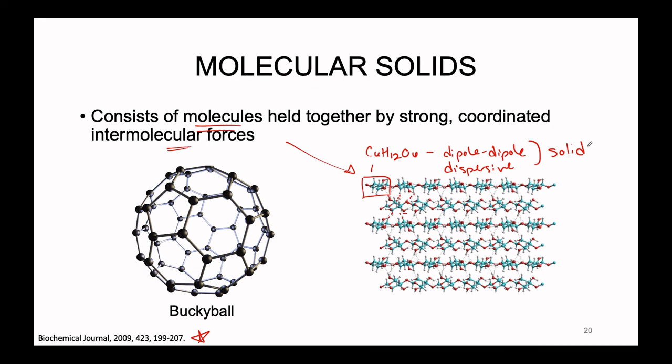Carbon can also take on another structure in its pure form. We just talked about diamond and graphite; here we can see what is known as the buckyball, also known as C60. There are 60 carbons specifically that come together to form this soccer ball-esque arrangement. Because there is a definite number of covalent bonds that can be formed here, we would call this a molecular solid as multiple buckyballs start coming together and interacting in a coordinated intermolecular force network.